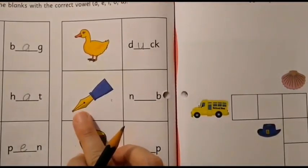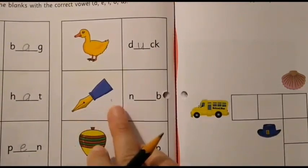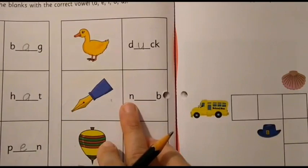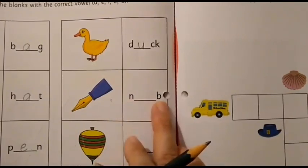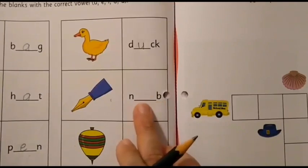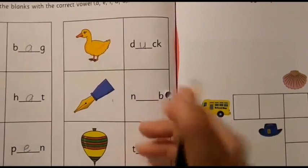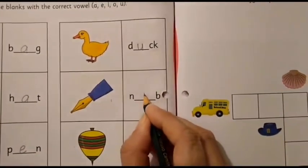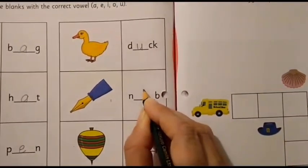What can you see here? What is this? This is a nib. N. B. Nib. Here you can get to see N and B. Nib. I. So, which letter, which vowel will come here? I. Which vowel? I. So, here we will write the vowel I.